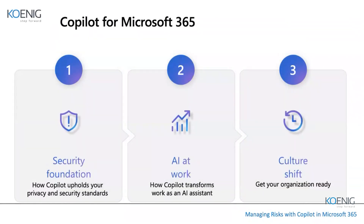Copilot for Microsoft 365 is designed on different principles, starting with a security foundation. Copilot respects all your existing security, compliance, and privacy settings. For example, if a user is denied access to certain data in SharePoint or OneDrive, they also cannot access that data through Copilot. Copilot will never bypass your security, privacy, or compliance configurations — it always respects whatever controls you've already created in your organization.